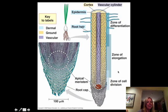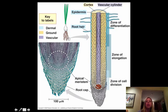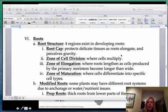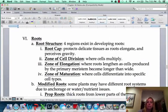I'll bet you can guess what happens in the zone of elongation — the cells get longer there. And then the last part is the zone of differentiation, and that's where the cells actually get told what type of cells they're going to be. So that's the zones of the roots.